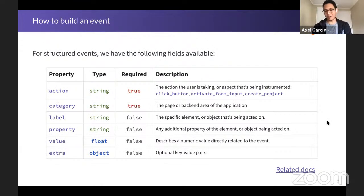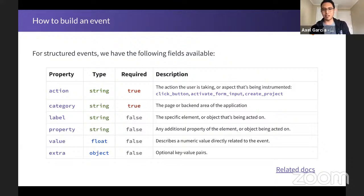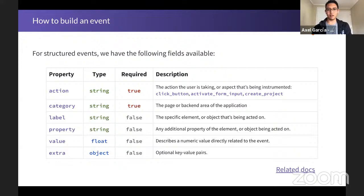Now let's talk about how to build an event. The main source of data is structured events, and we have the following fields available. First, we have action — arguably the most important field, as it describes the action the user is taking or the aspect being instrumented. In the front end, we see a lot of click button actions, and also actions like activate for input. We have a naming convention: write the name of the action as the first word, then identify the element separated by underscores. You can also find this in the documentation.